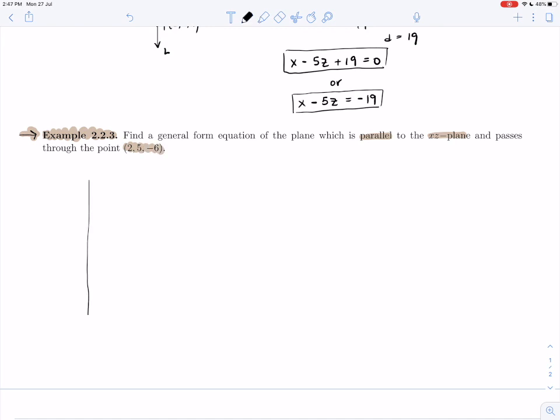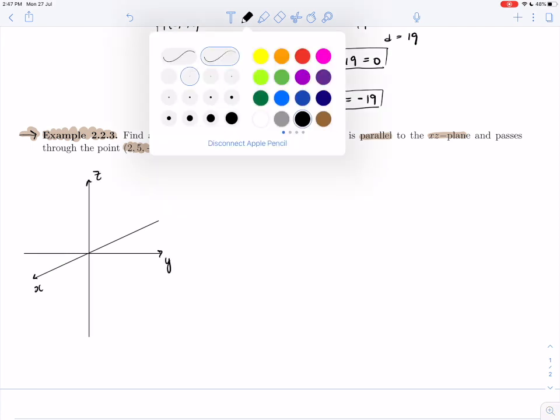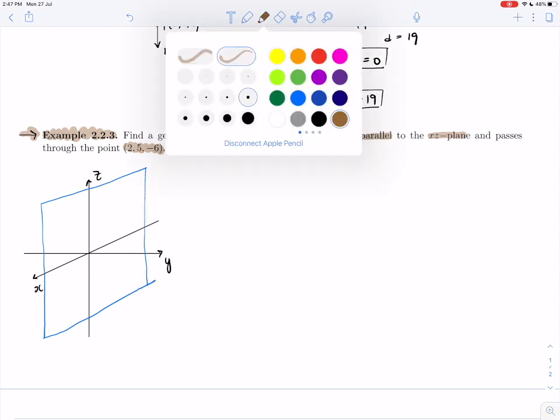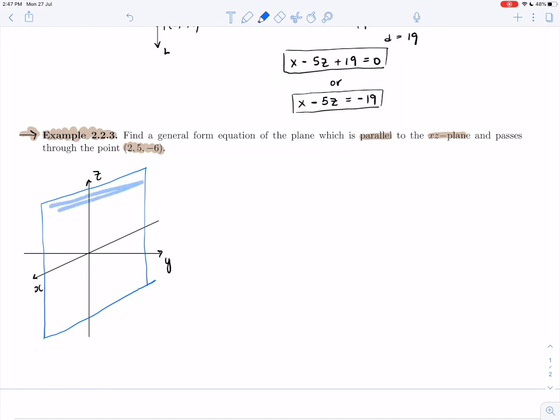So let's start again with a diagram. Let's get a set of axes up here so that we can understand what the Xz plane looks like. So there's our X, there's our Y, there is our Z. The Xz plane is the plane that contains the X axis and the Z axis. So if I were to draw it on my graph, the Xz plane would be there. Let's just shade that in a little bit. So there is our Xz plane.